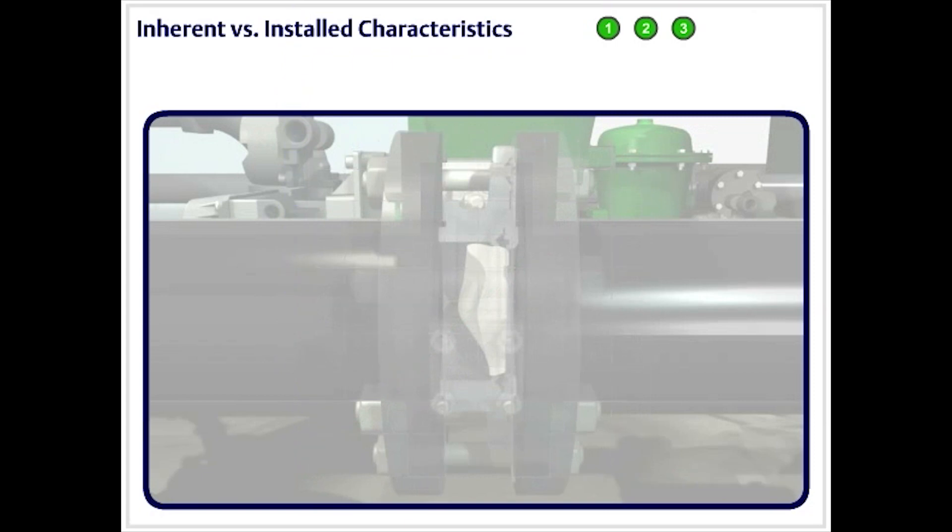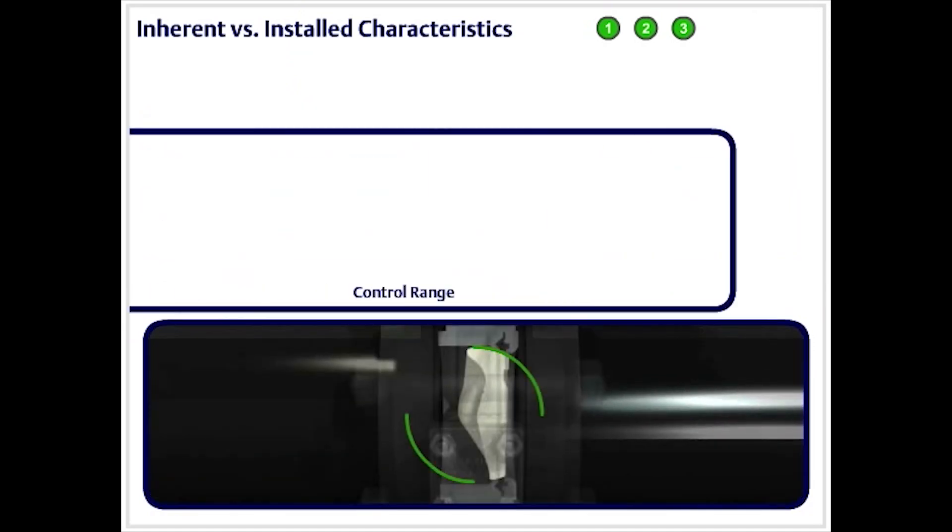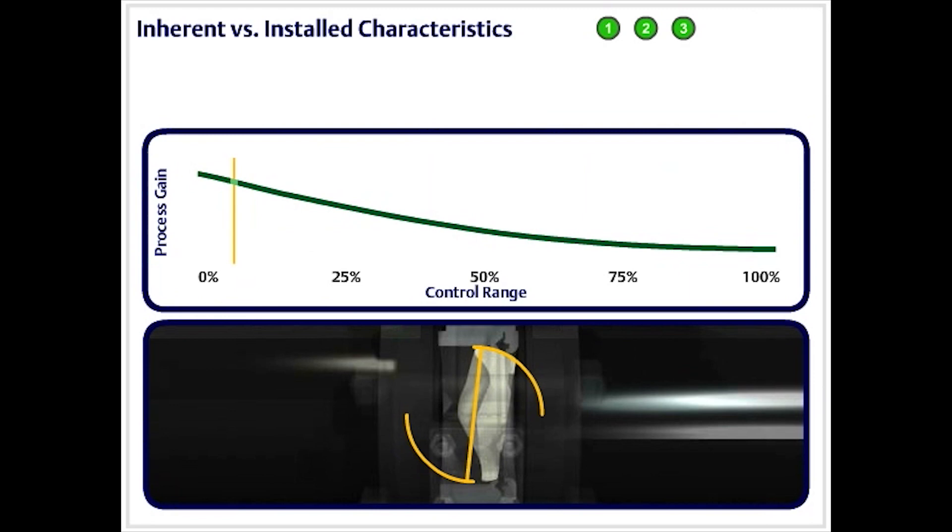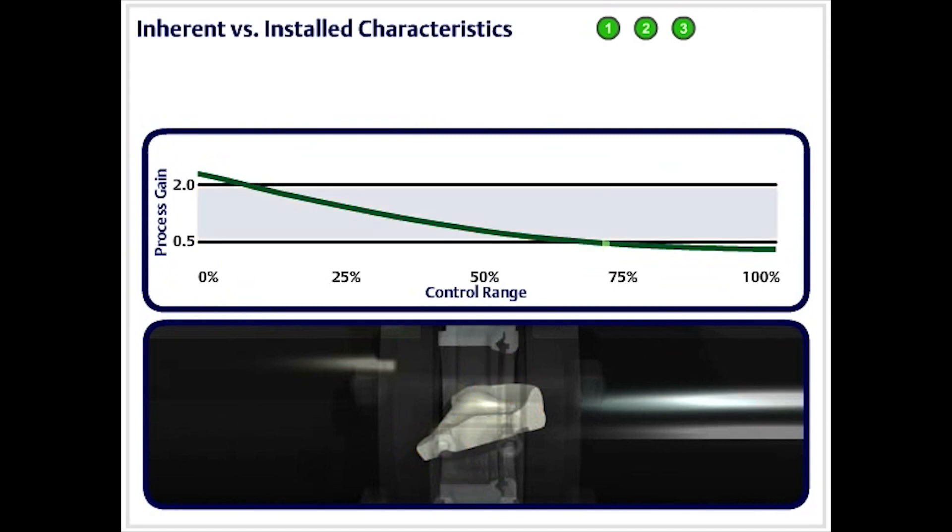Going one step further, mathematically, the slope of the installed flow characteristic curve is called valve gain. Valve experts believe that a valve provides effective control when, as the valve is operating, its installed gain remains between 2 and 0.5, with the ideal gain value being 1.